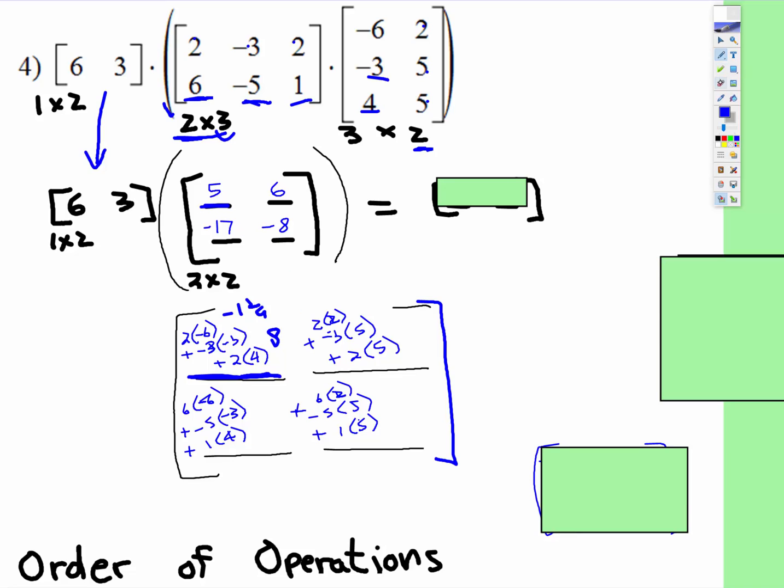And then we have, so I'm going to erase this now. Oh, no, I'm not. Once we know what this is, now we can multiply. This is a one by two. This matrix is a two by two. The two inside ones agree. So the new matrix will be a one by two.